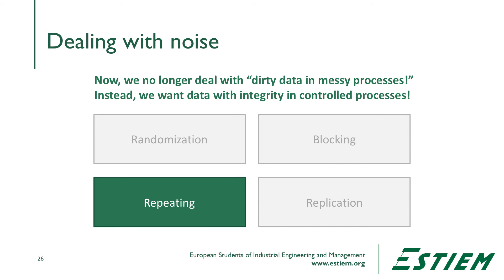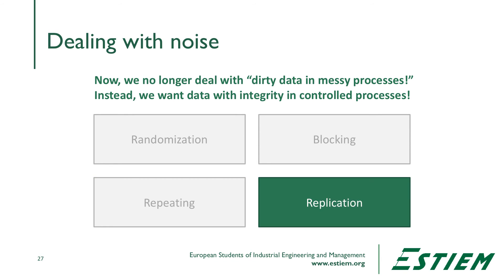Another technique is repeating: once we've done the experiment, without changing the setups, we do the experiment one more time. This gives us an idea of short-term variation in the process. If the process is stable in the short term, that's good; if not, it probably means we don't have all the factors properly identified. Replication is different — it's doing the experiment all over again after taking it down and running other experiments, then returning with different settings. This estimates long-term variation effects and shows whether there's variation due to setup, changeover, or different conditions.